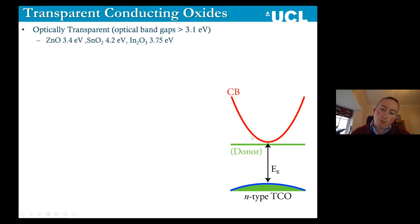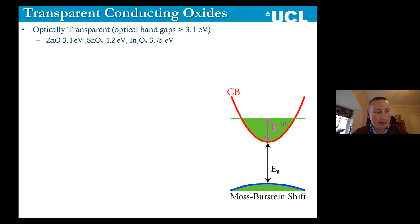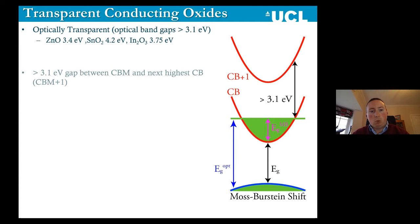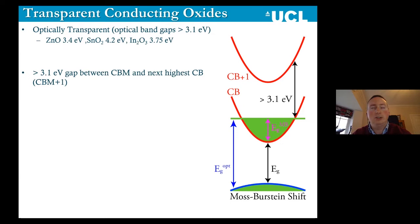When you inject electrons into these systems, when you add donor dopants to add extra electrons in the system, then you fill up the bottom of the conduction band and you get what's called a Moss-Burstein shift. This increases the optical band gap and makes it actually bigger than the fundamental band gap. One caveat is that obviously when you have so many electrons occupying the bottom of your conduction band, if light is still hitting your material, it could possibly excite these extra electrons into low-lying unoccupied states and that would reduce your optical transparency. So your second caveat is that you need a large separation between the conduction band minimum of the material and the next lowest conduction band.